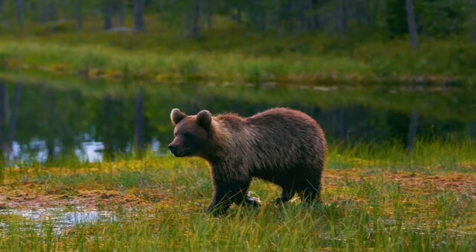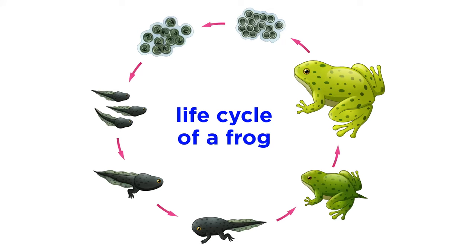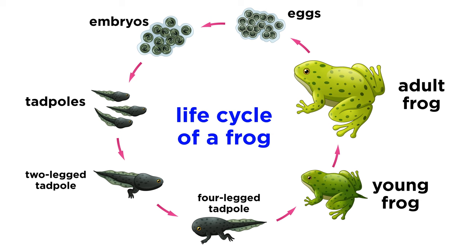What can an ecologist study when it comes to a single organism? First, they can study an organism's life history or cycle. This pertains to how the organism grows, develops with time, reproduces, and ultimately survives.